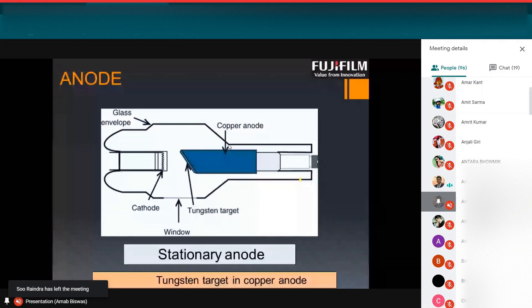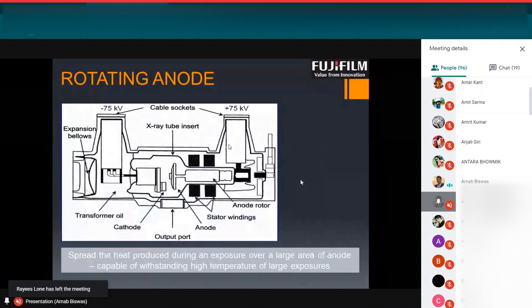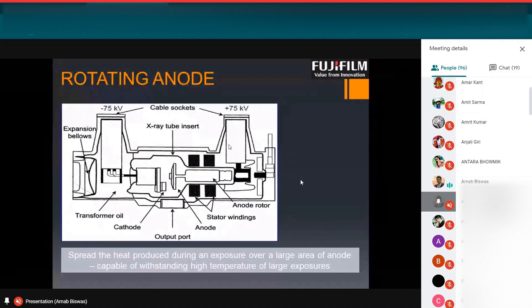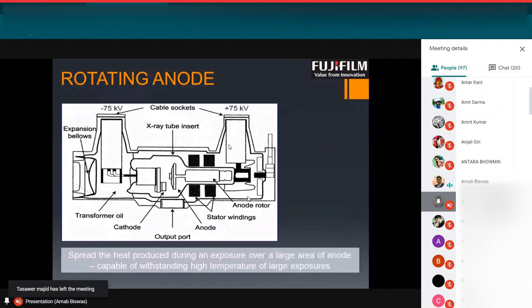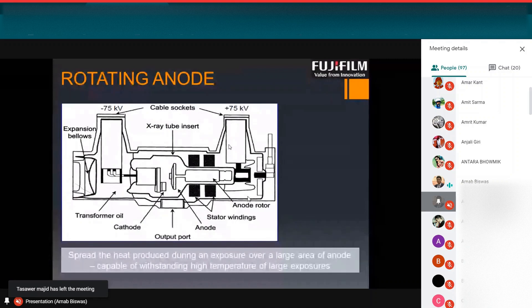This is rotating anode. As I previously discussed, what happens in a tube, in an X-ray tube, a tungsten filament is heated by electric current and it releases negatively charged electrons by thermionic effect. Due to high voltage potential difference between cathode and anode, the electrons are thus accelerated and hit the anode target.